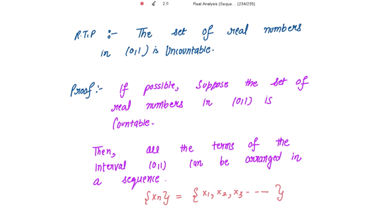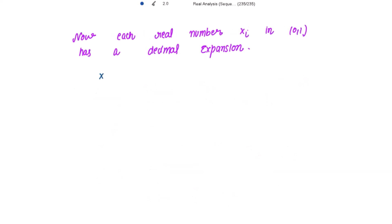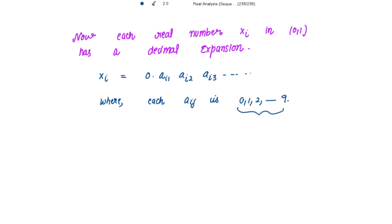Now, numbers belonging to the open interval (0,1) have a decimal expansion. Each real number xᵢ has a decimal expansion: xᵢ = 0.aᵢ₁aᵢ₂aᵢ₃... where each aᵢⱼ is one of the digits 0, 1, 2, up to 9. That is, aᵢ₁, aᵢ₂, aᵢ₃ can be any of these digits — 0, 1, 2, and so on — for their respective decimal places.